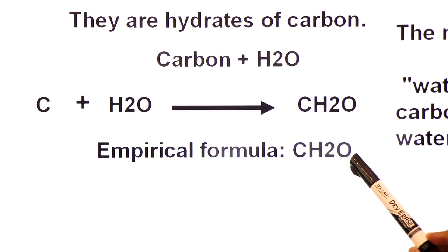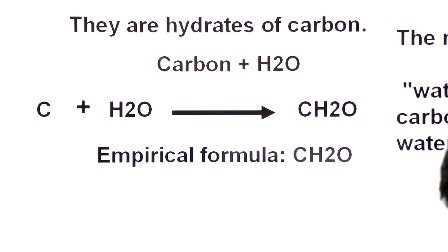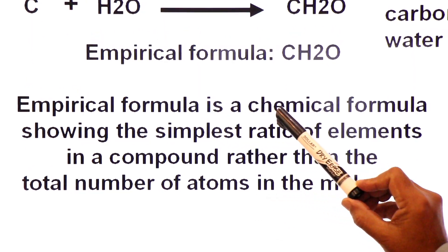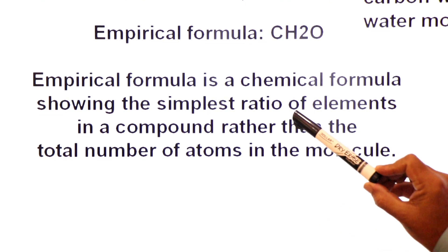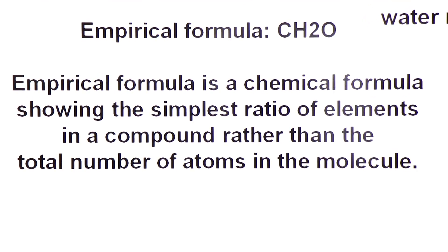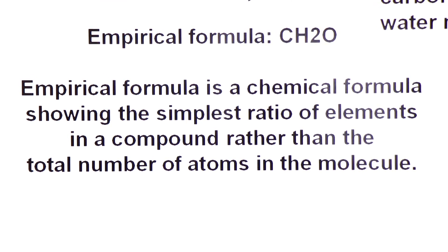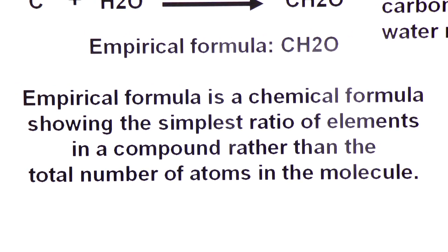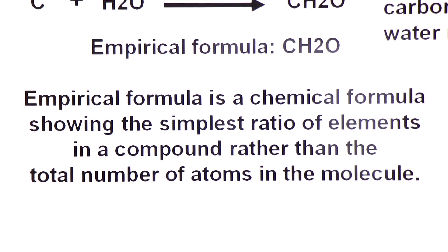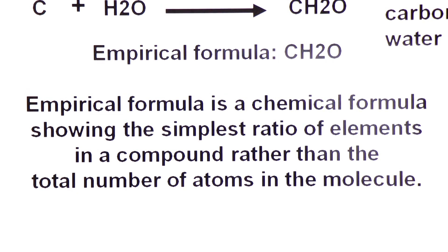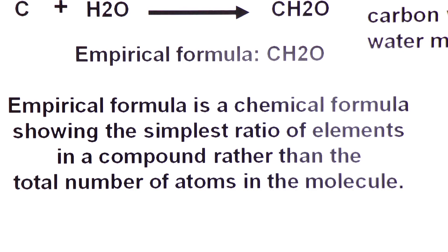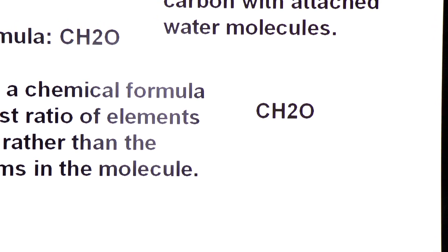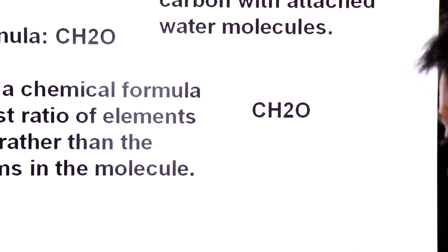Many carbohydrates have the empirical formula CH2O. The empirical formula is a chemical formula showing the simplest ratio of elements in a compound rather than the total number of atoms in a molecule. For example, CH2O is the empirical formula for glucose, which is a carbohydrate.